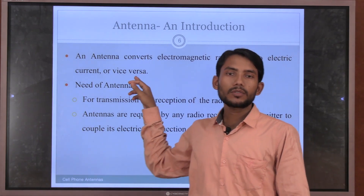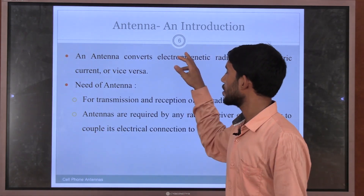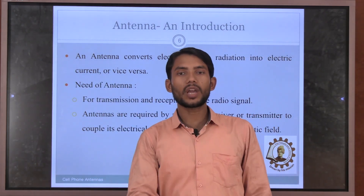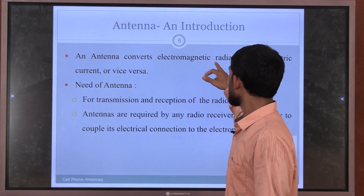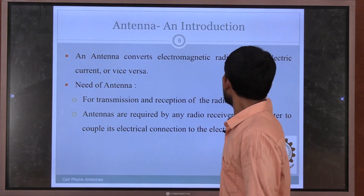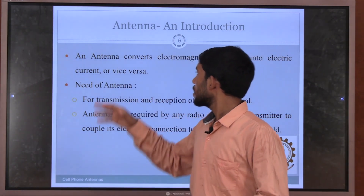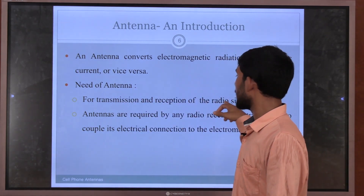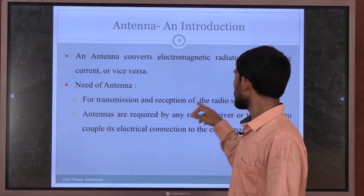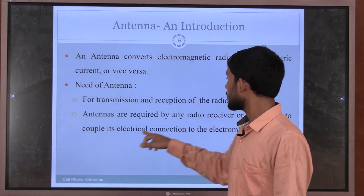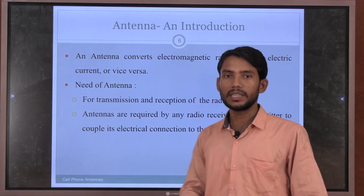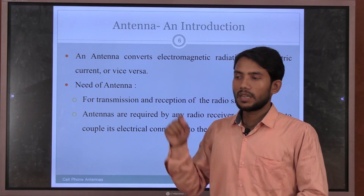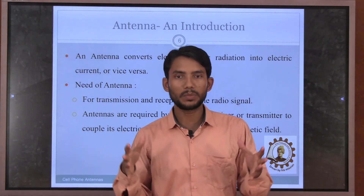Now we go to the antenna introduction section. An antenna converts electromagnetic radiation into electric current for transmission and reception of radio signals. Antennas are required by radio receivers and transmitters to couple their electrical connections to electromagnetic fields. Basically, an antenna is applicable to smartphones to transmit or receive electromagnetic radiation signals and convert them into electrical power.